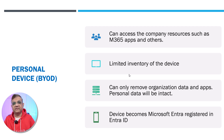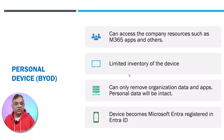For personal devices, if enrolled, the organization can only see applications targeted via Intune — they won't see the user's personal application inventory. They can only remove organization data and apps; personal data remains intact because it's not a corporate device. Importantly, these devices are Microsoft Entra registered — not Microsoft Entra joined. Even though we could make them Entra joined with full Intune control, that's not what organizations should do with BYOD devices.